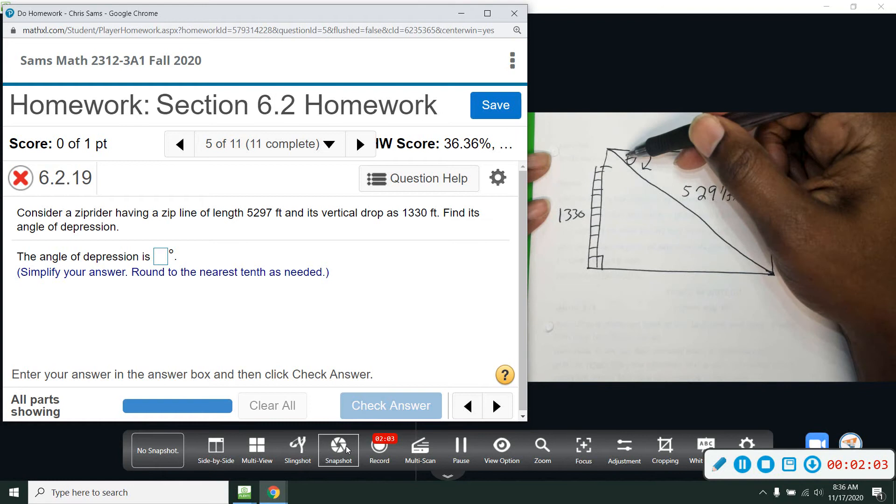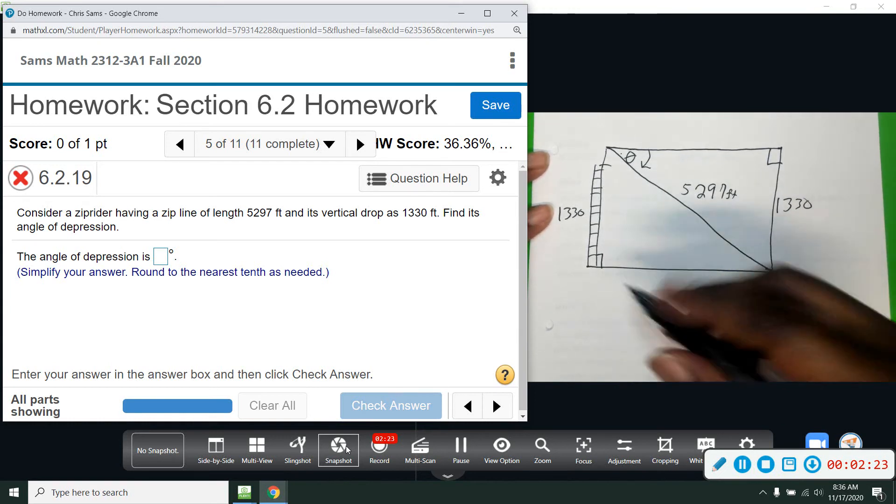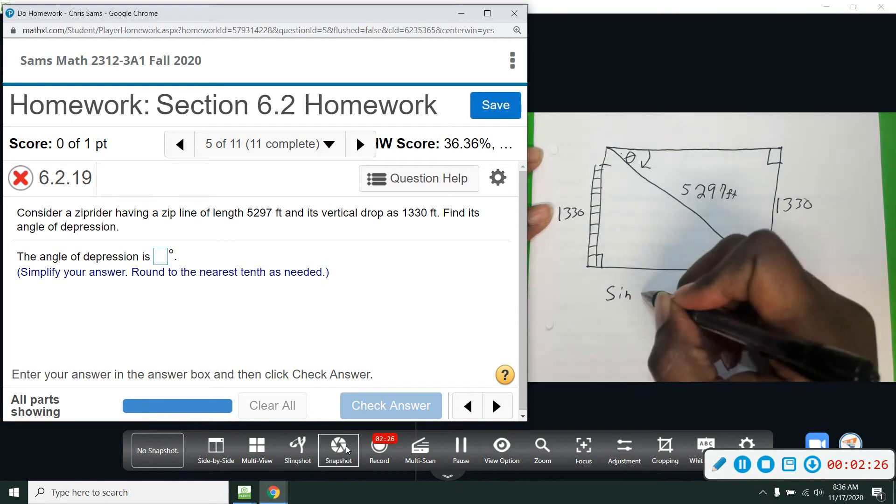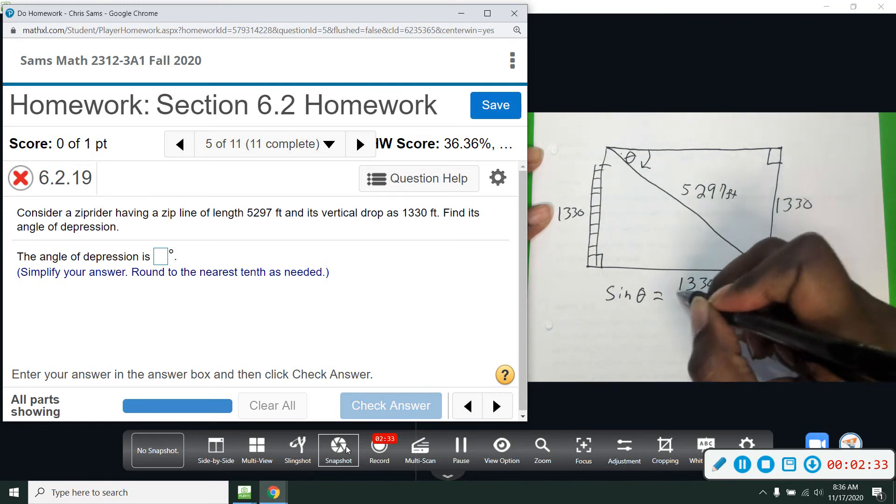So either way you do it, you have a right angle. And from this angle, the sides that we have would be the opposite side and the hypotenuse. Opposite this angle right across and then the long side is the hypotenuse. So the trig function that uses opposite and hypotenuse is sine.